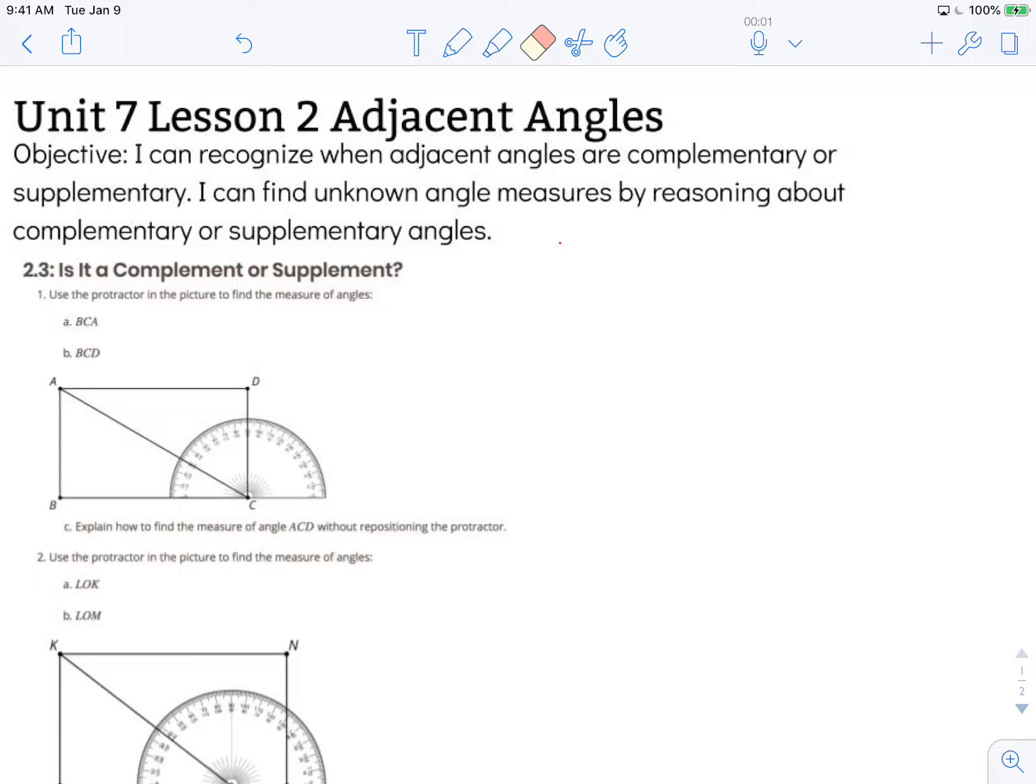Let's define a few vocabulary words before we get started. We have the word adjacent, complementary, and supplementary. Remember, adjacent angles have to share two things: they must share a side and a vertex.